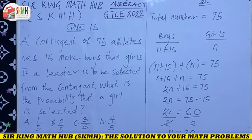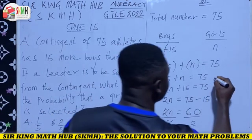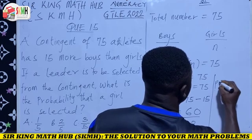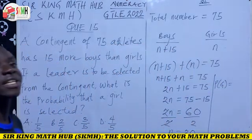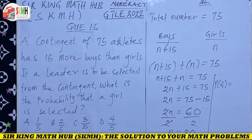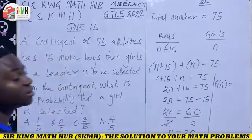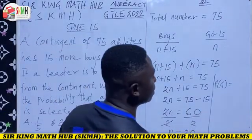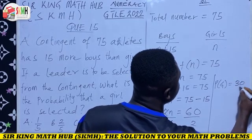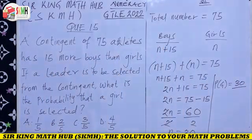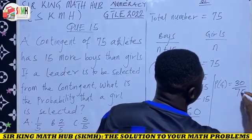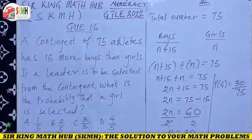So there are 30 girls in the contingent. Now we can calculate the probability of selecting a girl. The probability of selecting a girl equals the number of girls divided by the total number of athletes, which is 30 out of 75.